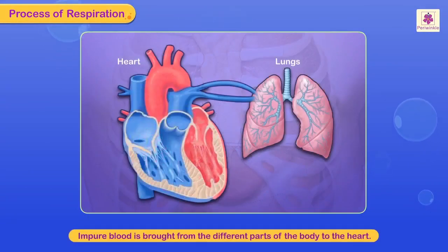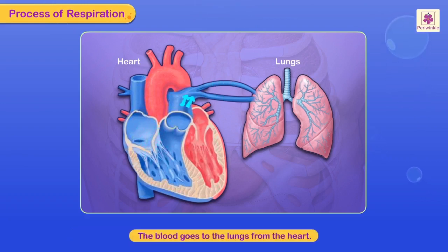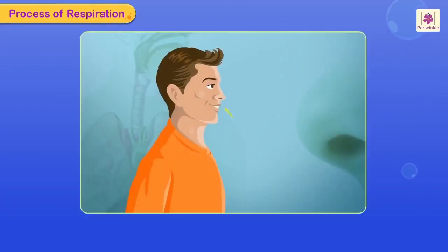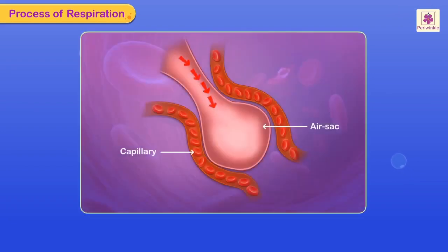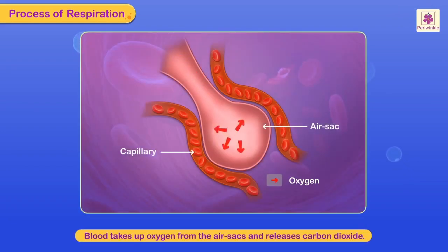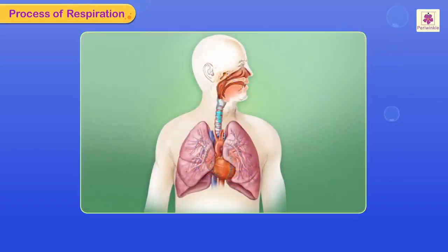Impure blood is brought from different parts of the body to the heart, and from the heart it goes to the lungs. As you breathe, air containing oxygen reaches the air sacs in the lungs, and the blood takes up oxygen from the air sacs and releases carbon dioxide. The air sacs now contain carbon dioxide, which leaves your body as you breathe out.